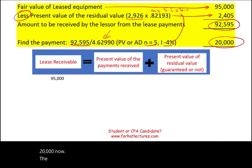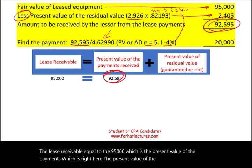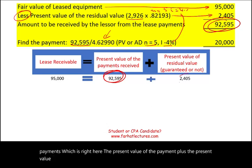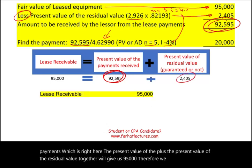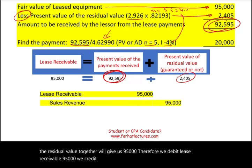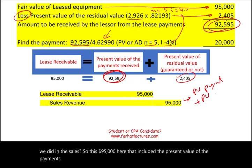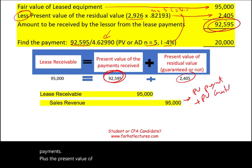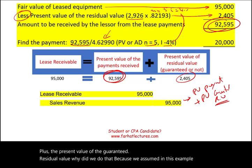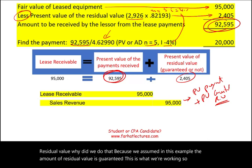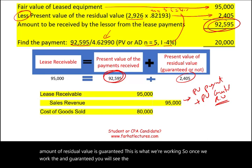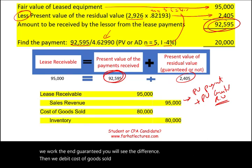The lease receivable equals $95,000, which is the present value of the payments plus the present value of the residual value combined. Therefore, we debit lease receivable $95,000 and credit sales revenue $95,000. Why? Because the $95,000 includes the present value of the payments plus the present value of the guaranteed residual value. Then we debit cost of goods sold $80,000 and credit inventory $80,000.